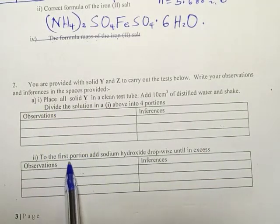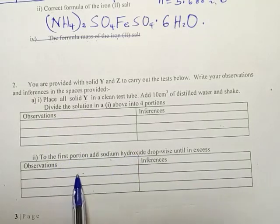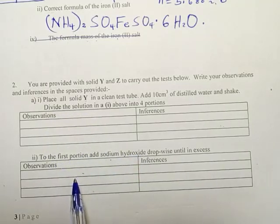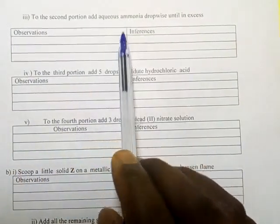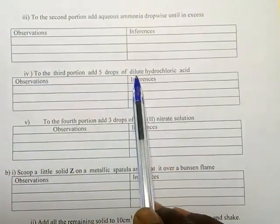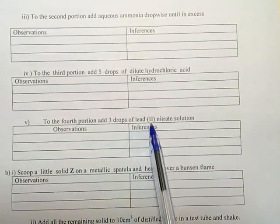You go through and look at the reagents that are used. For example, the first one is sodium hydroxide. You go to roman three, aqueous ammonia, and then roman four, diluted hydrochloric acid. Roman five, lead nitrate.